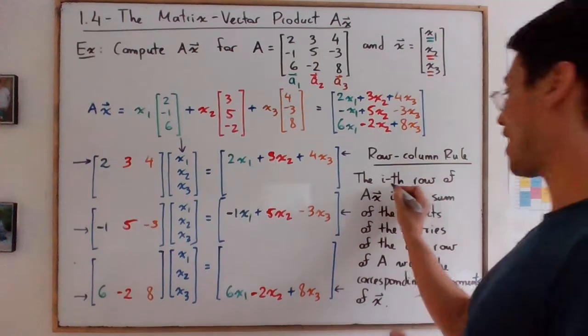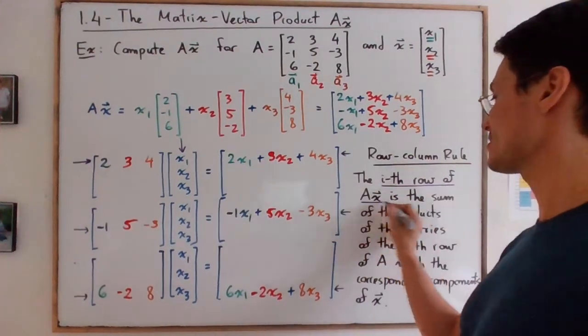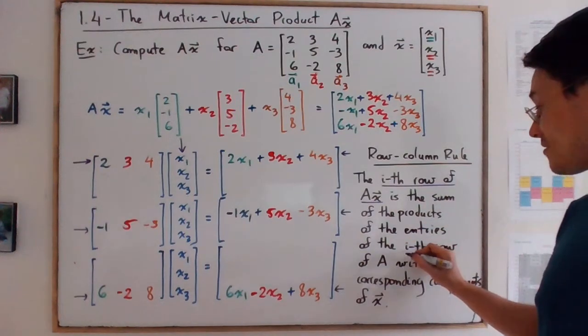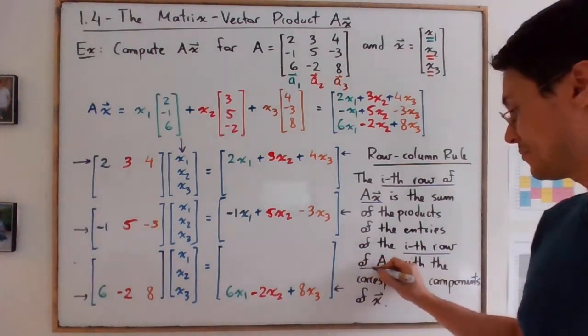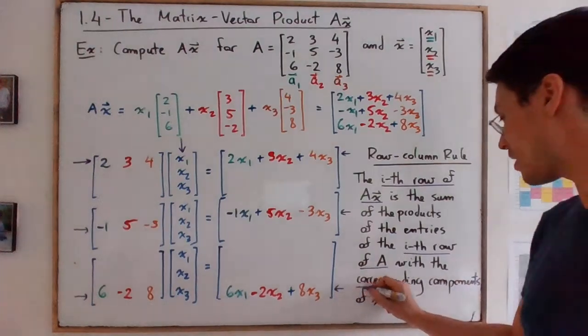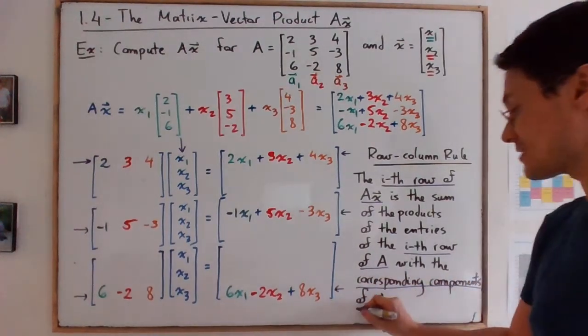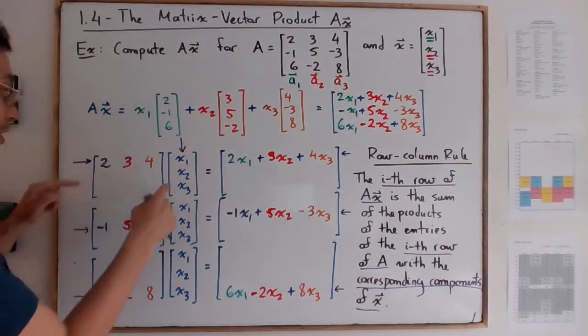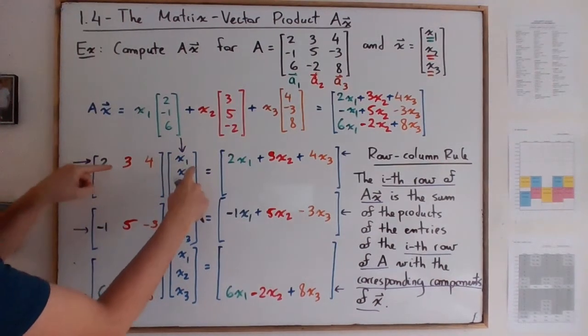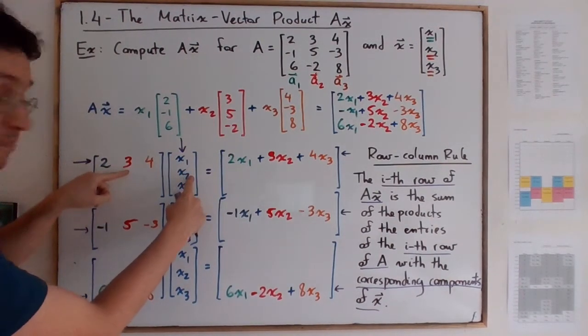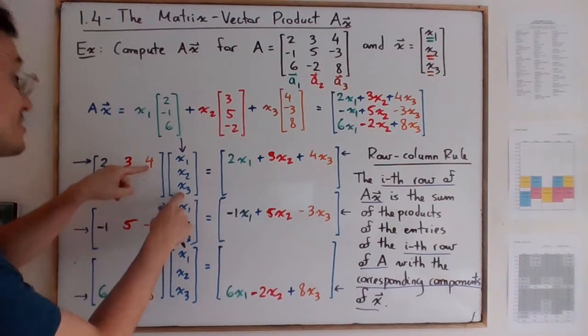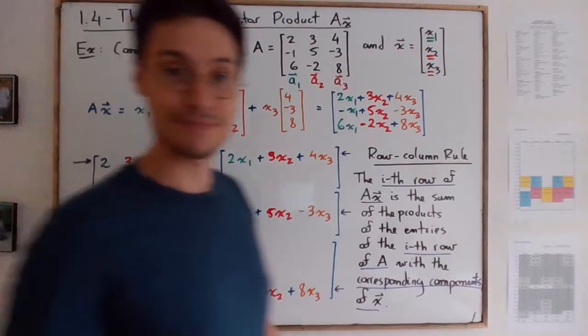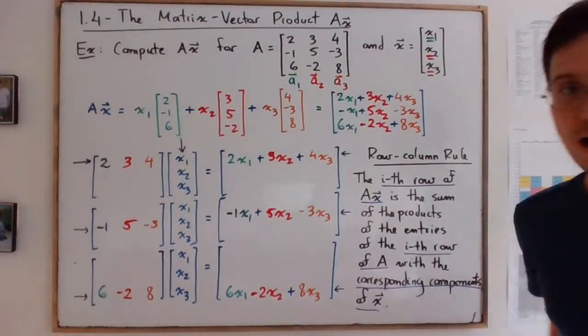The ith row of Ax is the sum of the products of the entries of the ith row of A with the corresponding components of x. So here, the ith row of Ax, I'm talking about this matrix, it's going to be the sum of the product of the entries of the ith row of A with the corresponding components of x. So in other words, if you take the first one, for example, you're going to do 2x1 plus 3x2 plus 4x3. There you go. So that's what you get over here.